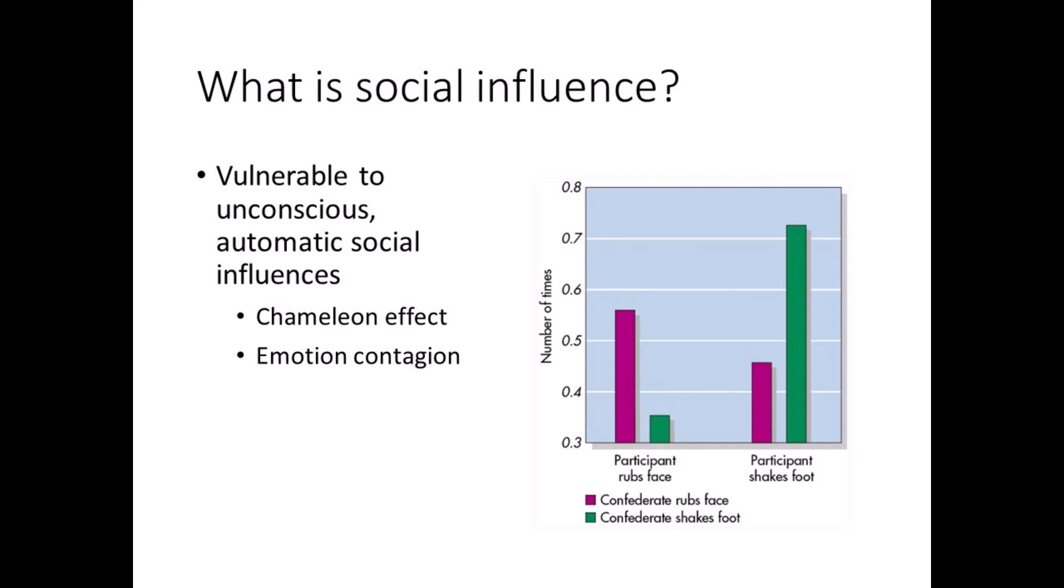Let's take a look at some of the reasons we conform to the group. One of the reasons we conform is because we have a need to be right. If we think other people are correct in their judgments, we may conform, especially when we aren't sure or don't know. This is called informational influence, the power to impact others through information.